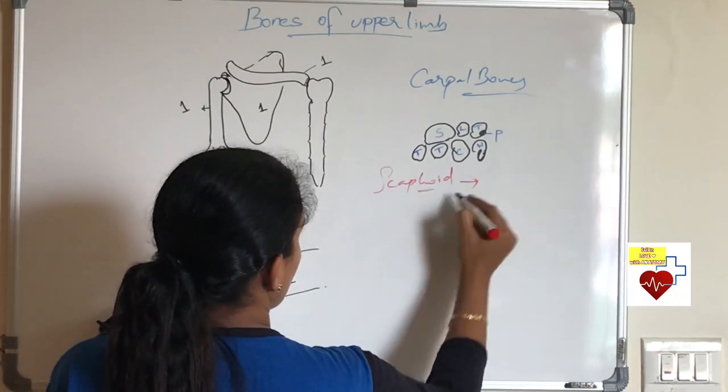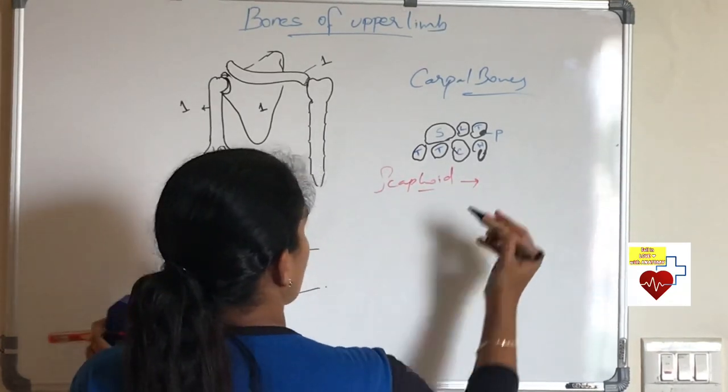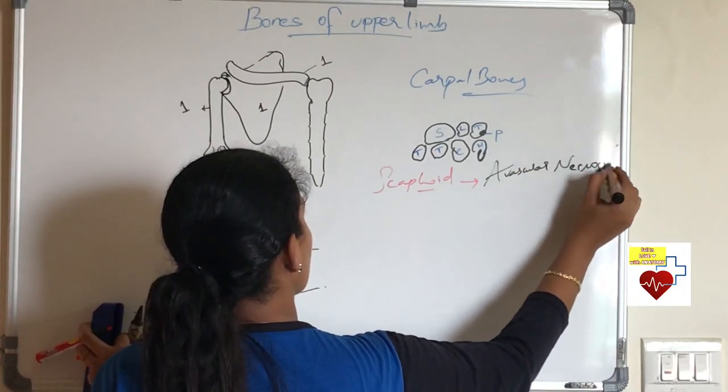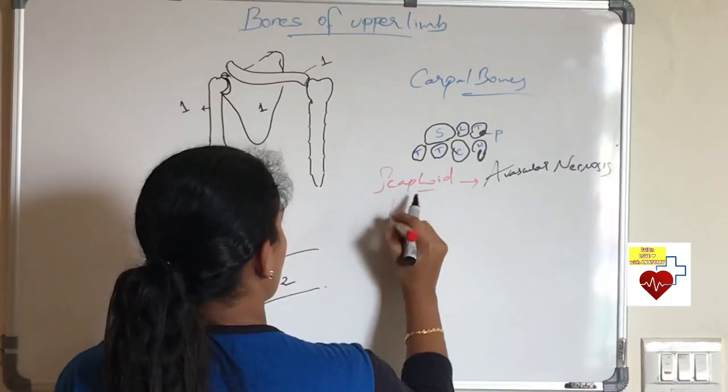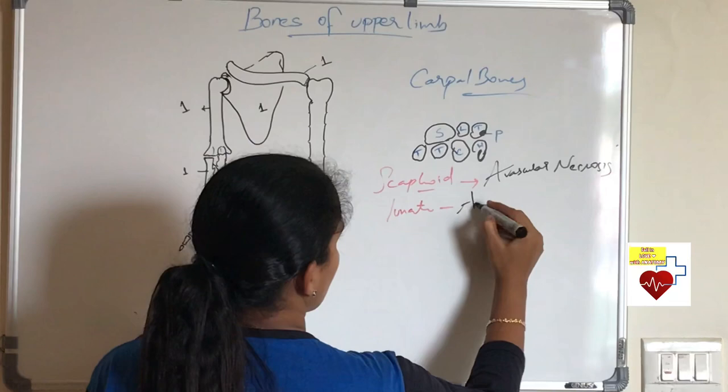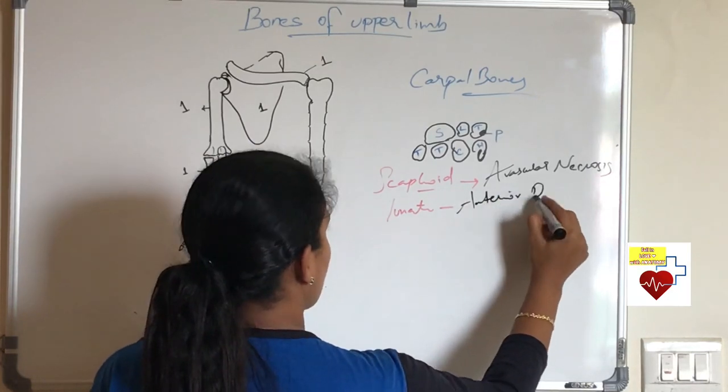About each bone. About scaphoid: just remember the term avascular necrosis. For this you should learn the blood supply of scaphoid. In scaphoid fracture you should remember avascular necrosis.